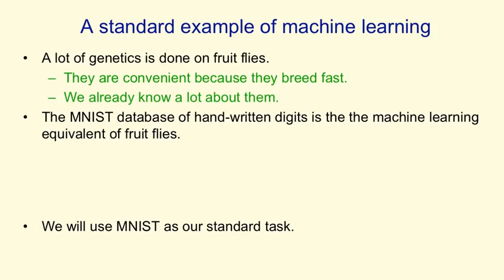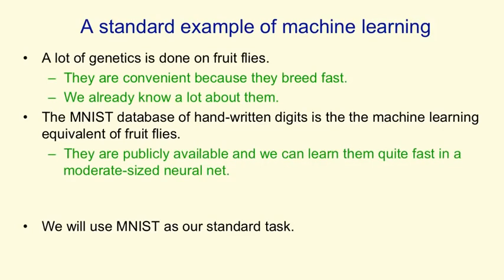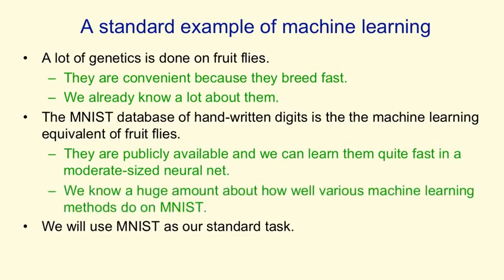The MNIST database of handwritten digits is the machine learning equivalent of fruit flies. It's publicly available, so we can get machine learning algorithms to learn how to recognise these handwritten digits quite quickly — it's easy to try lots of variations. We know huge amounts about how well different machine learning methods do on MNIST, and in particular, the different methods were implemented by people who believed in them, so we can rely on those results. For all those reasons, we're going to use MNIST as our standard task.